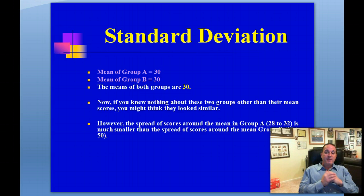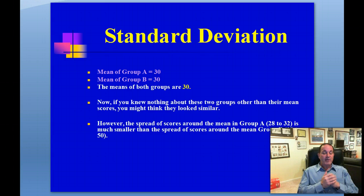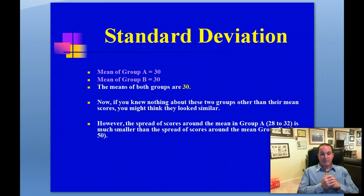If you knew nothing about these two groups, you might think they actually look similar. If a person saw that Group A had a mean of 30 and Group B had a mean of 30, you might think they did about the same. But we know that is not true whatsoever. In Group A we had scores of 28, 29, 30, 31, and 32, while in Group B we had scores of 10, 20, 30, 40, and 50.